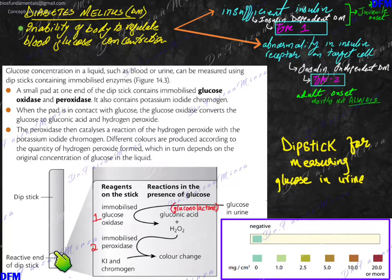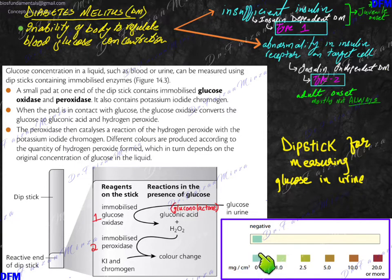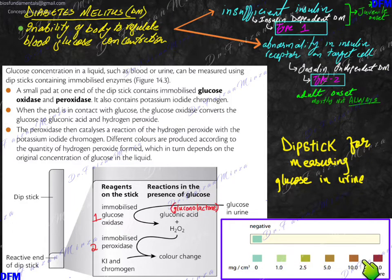To test a urine sample, I place the dipstick's reactive end into a beaker containing the urine sample. The reactive end should change color if glucose is present. If glucose is absent or below 1.0 mg/cm³, the color stays the same, indicating no glucose. If the color changes to a darker shade, it reflects the amount of glucose present, suggesting the person may be suffering from diabetes mellitus.